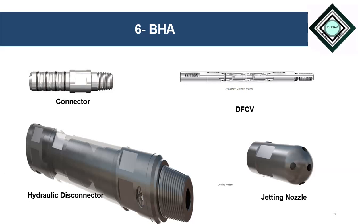The third part of the BHA is the hydraulic disconnect, which is used to release the coil tubing in a situation where the BHA gets stuck in the well. The fourth part is the jetting nozzle, which is used to provide the jetting effect of fluid so that we can clean the formation.